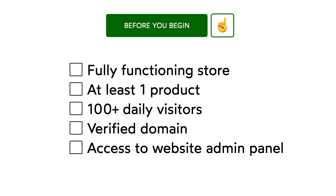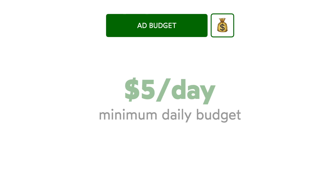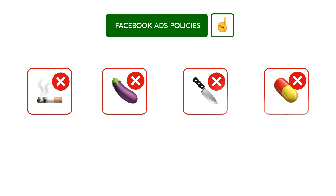You will need access to the site admin panel and be able to update your website code for some of the ad setup steps. Keep in mind that the minimum ad budget is $5 a day, so set aside at least $150 for the first month. You need to make sure that your store, products, and Facebook page all comply with Facebook advertising policies.